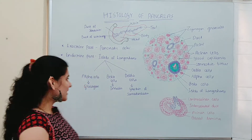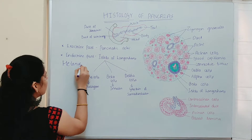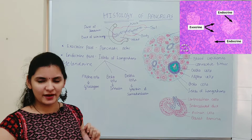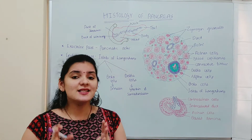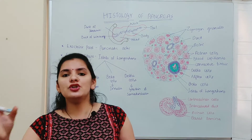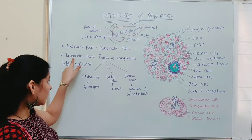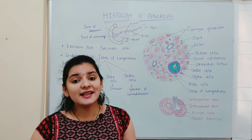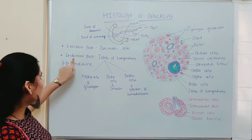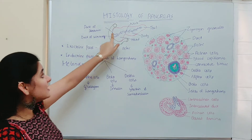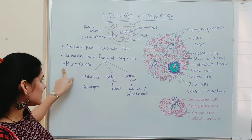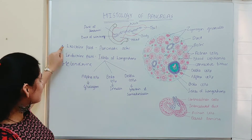Pancreas is called a heterocrine gland. Heterocrine means a gland having both exocrine and endocrine parts. Exocrine is a part of the gland which secretes its secretion through a duct into a targeted area, also called a ducted gland. Whereas the endocrine part secretes its secretion directly into the blood, also called a ductless gland. So this pancreas has both parts, which is why it is called a heterocrine gland.